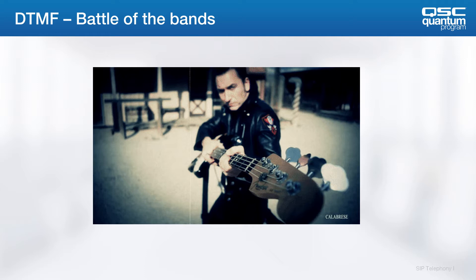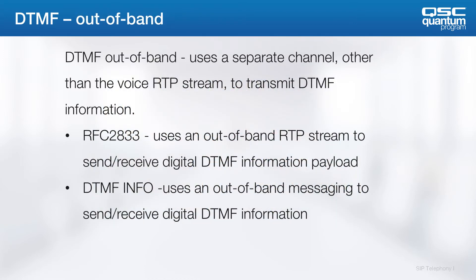In-band refers to RTP streams, while out-of-band means the digits are on the SIP message instead of RTP. There are two versions supported within the QSYS softphone: RFC2833 and DTMF info.